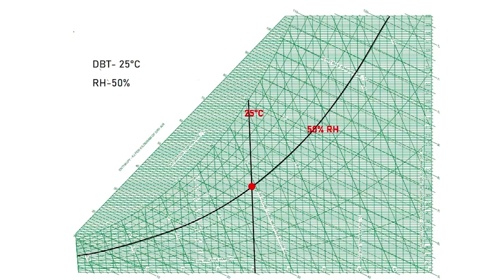From this intersecting point, we can read all other parameters. Tracking along the diagonal line gives a wet bulb temperature of 18°C, and the dew point temperature is identified as 14°C. Enthalpy is calculated as 51 kilojoules per kilogram, the humidity ratio is 0.01 kilogram per kilogram, and the specific volume is 0.858 cubic meters per kilogram. So from just two known parameters, we can estimate all the others.